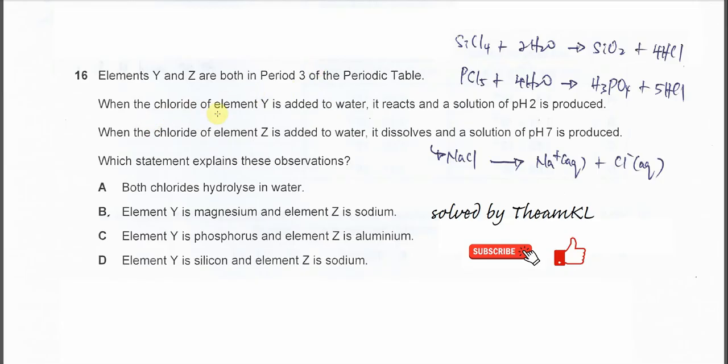When the chloride of element Y is added to water, it reacts and a solution of pH 2 is produced. So this statement lets us know that it might be silicon tetrachloride or phosphorus pentachloride, because these two chlorides will form an acid solution.